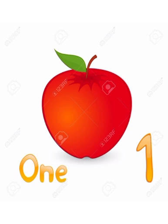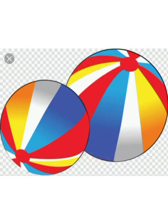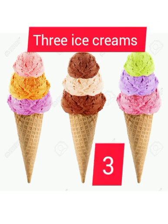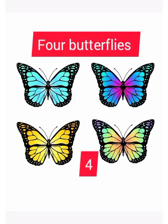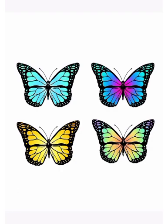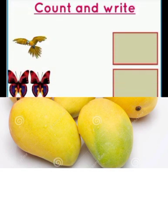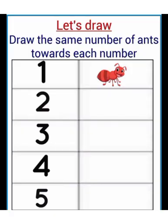Look — it's one apple here, these are two balls, three ice creams, four butterflies, five mangoes. Draw these pictures, then count and write in your notebook. Then let's draw, towards each number, the same number of ants.